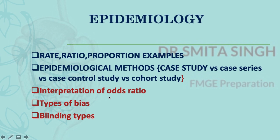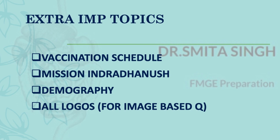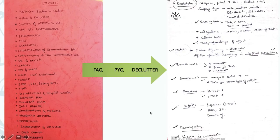Know how to interpret odds ratios: what it means when the value is greater than one, less than one, or equal to one. Types of bias are important, as are blinding types — since blinding is how you address bias. Vaccination schedule is a must — you cannot miss it. Mission Indradhanush is also important. Read demography thoroughly, including ratios, terminologies, and pie charts, as it forms the base for understanding epidemiology. Also study logos for image-based questions.